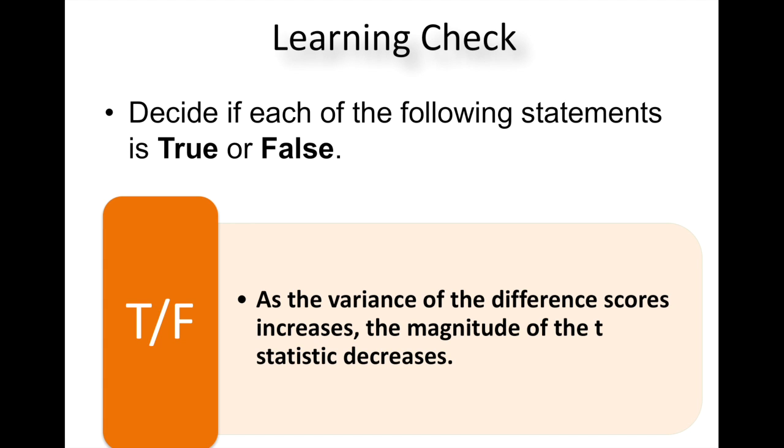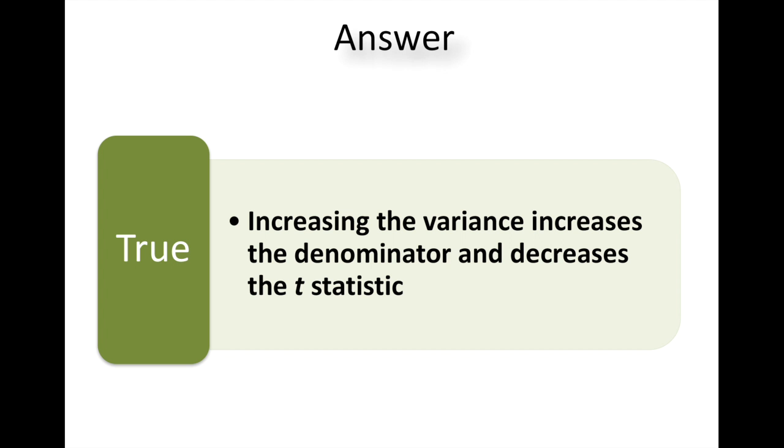As the variance of the difference scores increases, the magnitude of the T statistic decreases. So what do you think happens to that T statistic when you start messing with the variance of the different scores? It does. So increasing the variance, making those scores be all over the place more or have a greater inconsistency decreases that power of the T statistic.